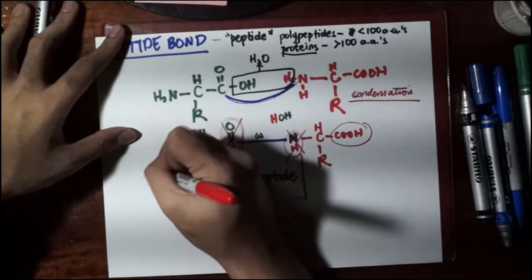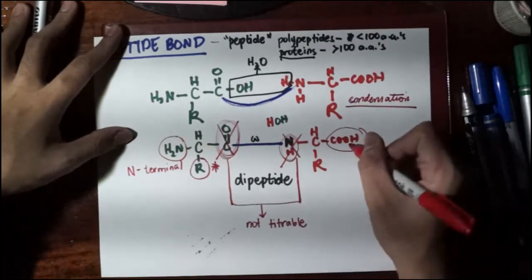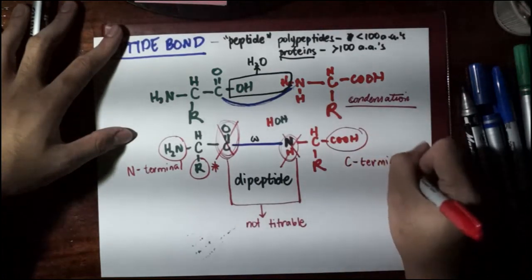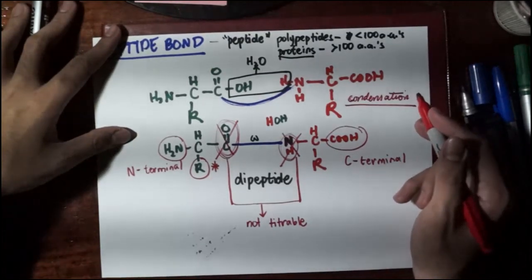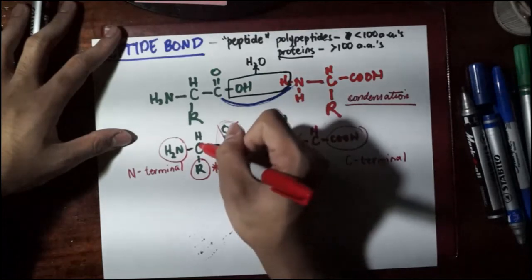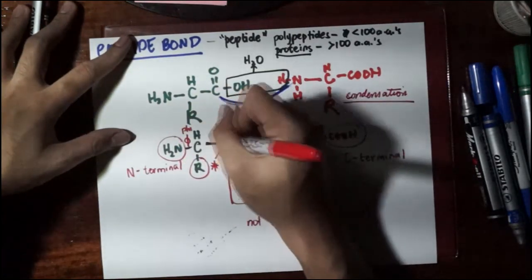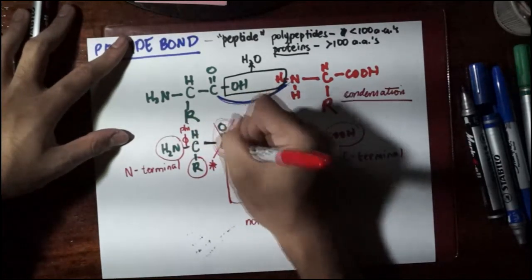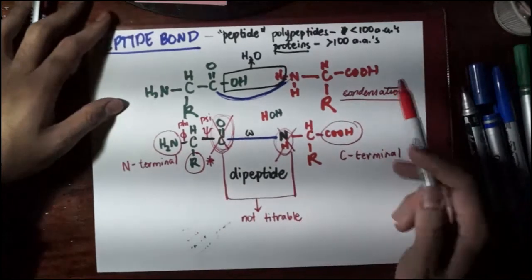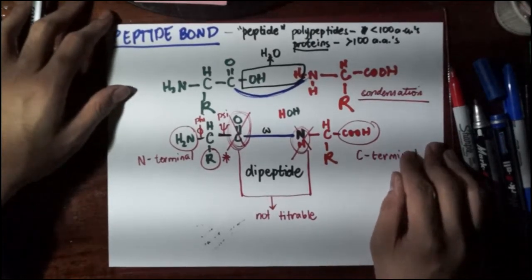The leftmost end with the free amino group is called the N terminal, because there's a nitrogen there that can have a charge. The rightmost end with the free carboxyl group is called the C terminal. Other bonds in the backbone also have names: the bond between the alpha-carbon and the amino group is the phi (φ) bond, the bond between the alpha-carbon and the carbonyl carbon is the psi (ψ) bond, and the peptide bond itself is omega (ω).